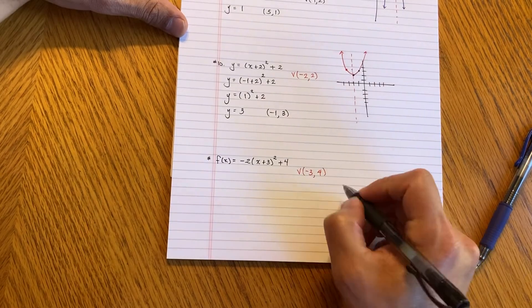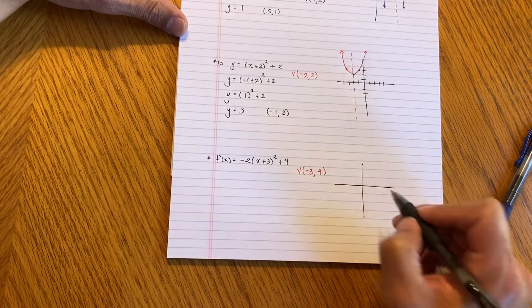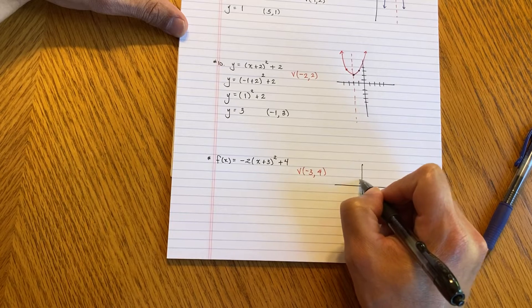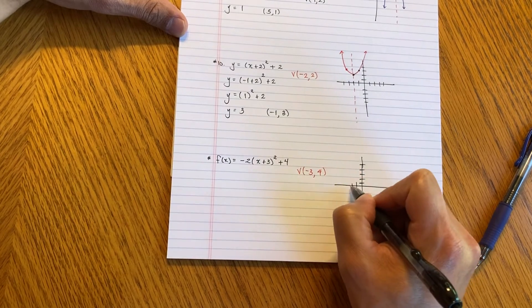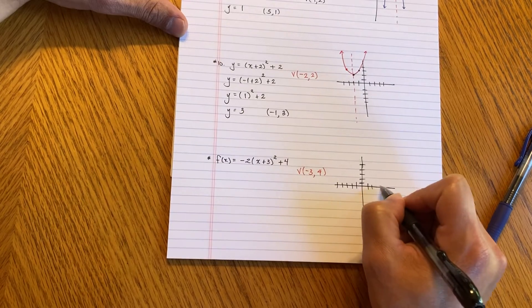So let's go ahead and graph that. That's my vertex. Negative 3, positive 4. So 1, 2, 3, 4, 5. 1, 2, 3, 4, 5. 1, 2, 3, 4, 5.